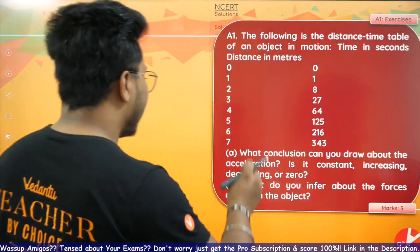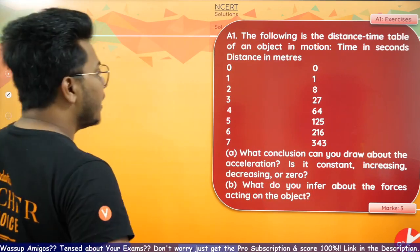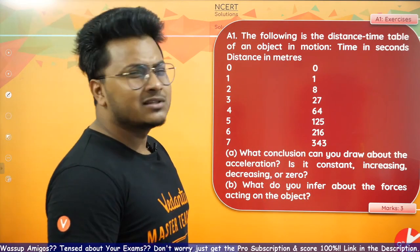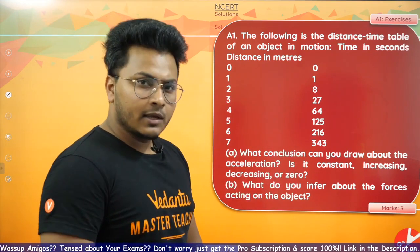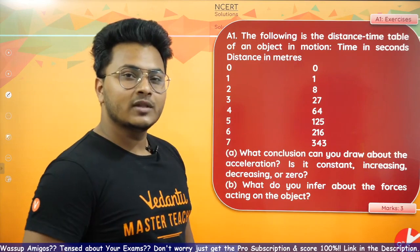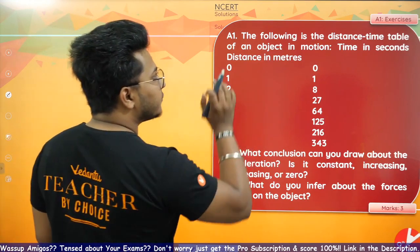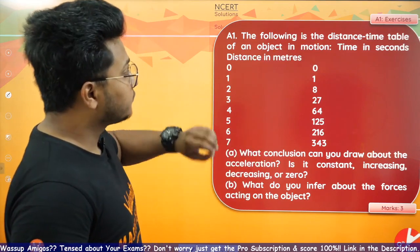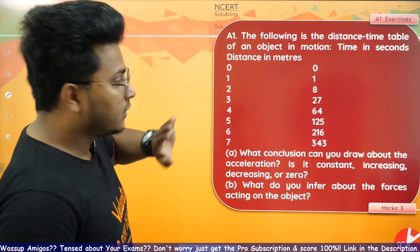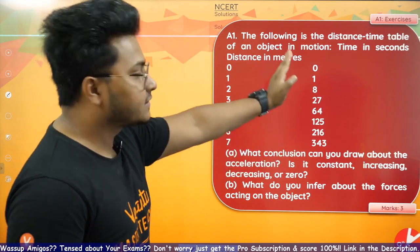Question number 1. It's a very sweet, cute question that you need to answer on an explanation basis. There are two parts, and for both you have to apply the proper concept. The question gives us a distance-time table of an object in motion — time in seconds and distance in meters.